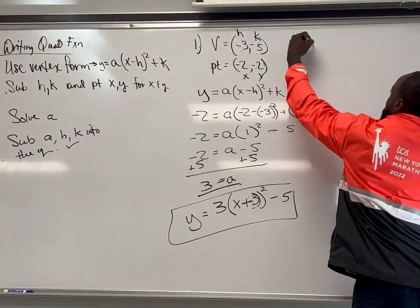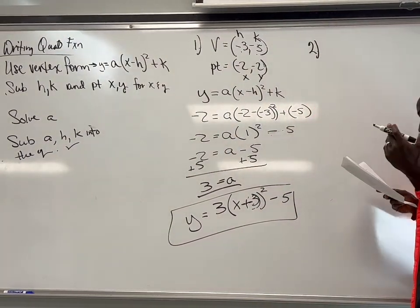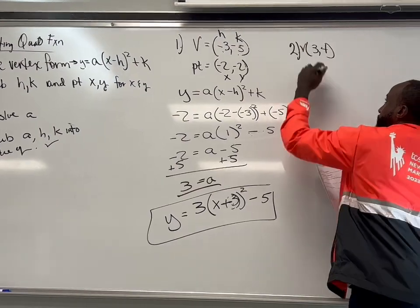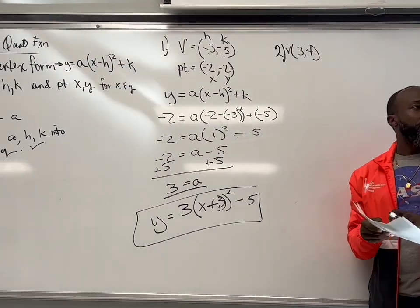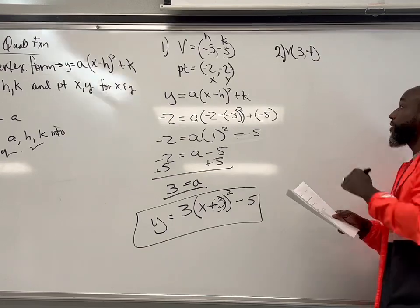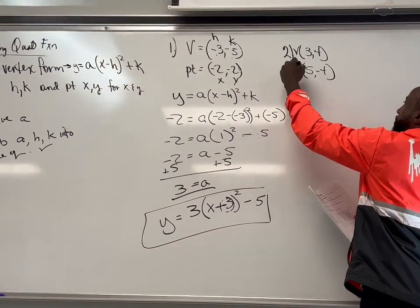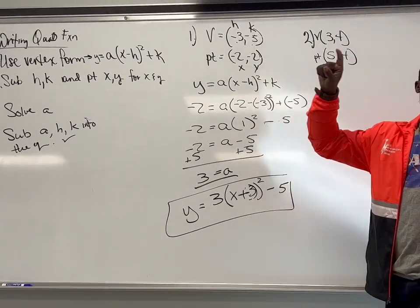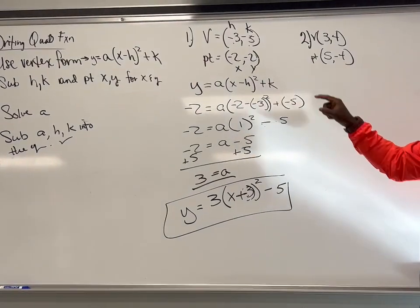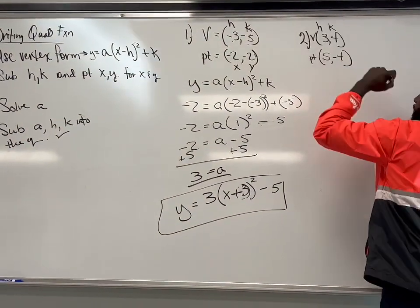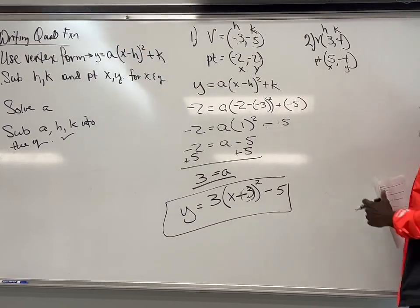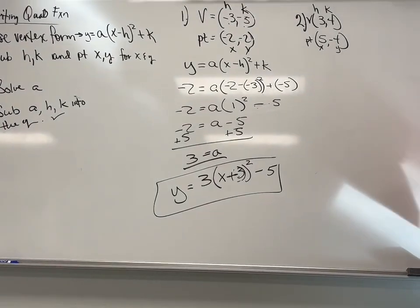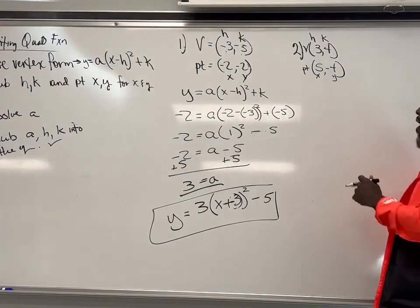Let's do another one, number 2. Your vertex is what? I got 3, 4 for the vertex. And that point — do y'all see that point there? That point is located at 5, negative 4. That's the point. First things first, we're going to use vertex formula. We're going to substitute h, k, x, and y. 3 is h, 4 is k, x is 5, and y is negative 4.